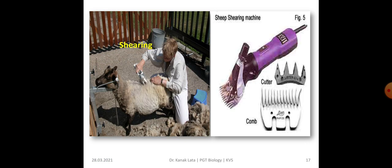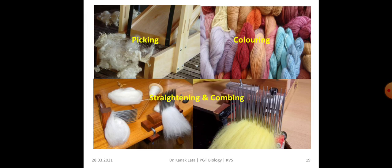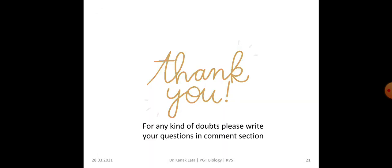Here you can see the shearing machine. With the help of this machine, the process of shearing is done. Here you can see scouring, then picking, coloring, and straightening and combing. This is the woolen fiber as well as the woolen fabric. Thank you. For any doubts, please write your question in the comment section.